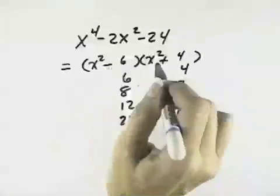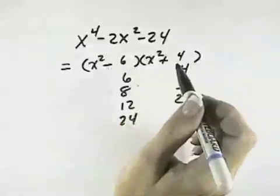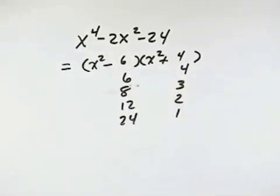And neither of those will break down further, because neither are perfect cubes or perfect squares, and therefore that's the completely factored form.